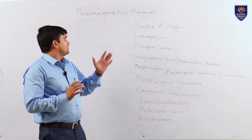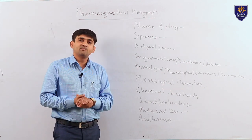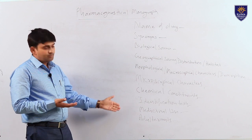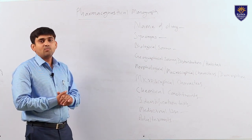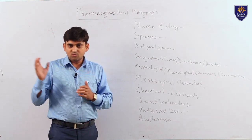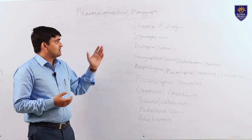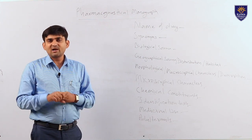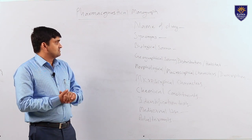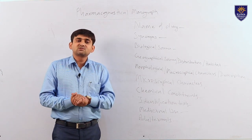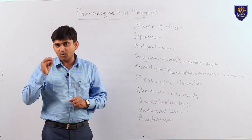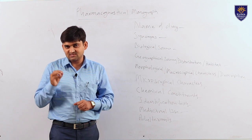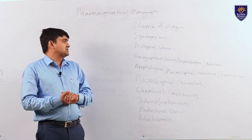As pharmacognosists, our role is to prepare monographs of crude drugs which are of medicinal importance. To compile a monograph, we start with the name of the drug as given in official books, publications, and journals. Then synonyms, which include various botanical names of the drug. The third point is biological source, which specifies the exact plant part of medicinal importance along with the botanical name composed of genus and species, and the family.